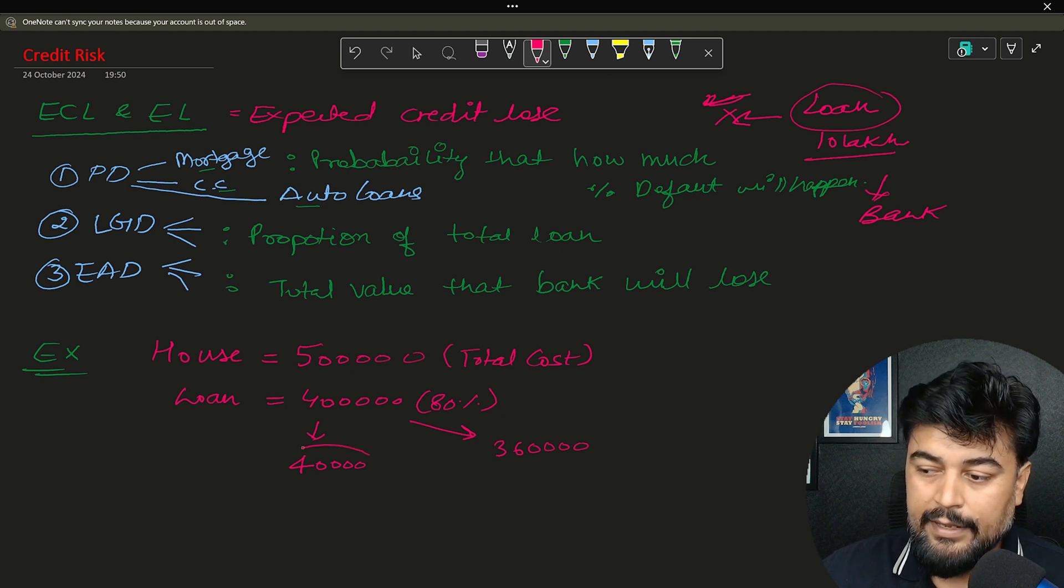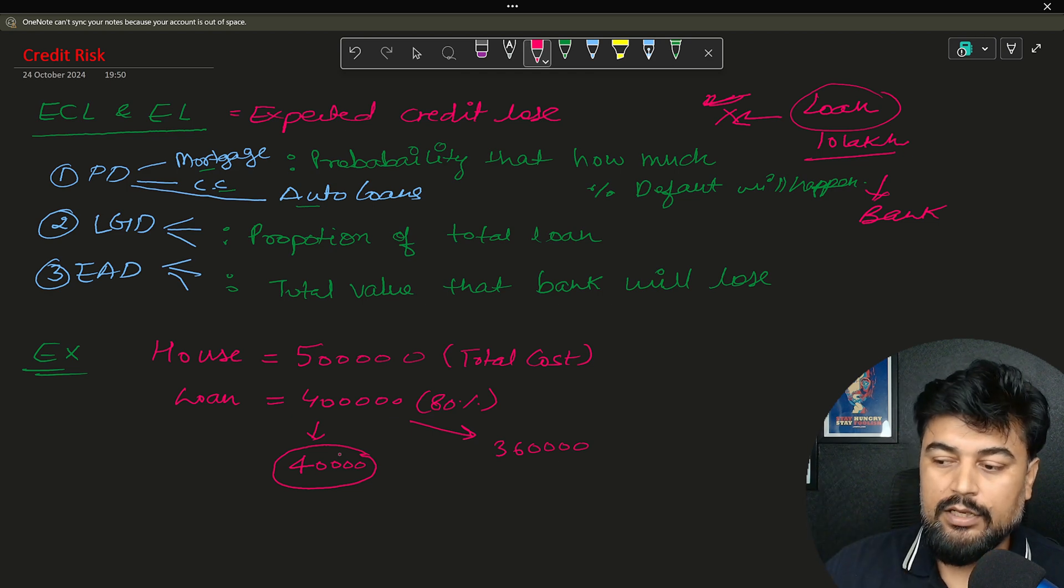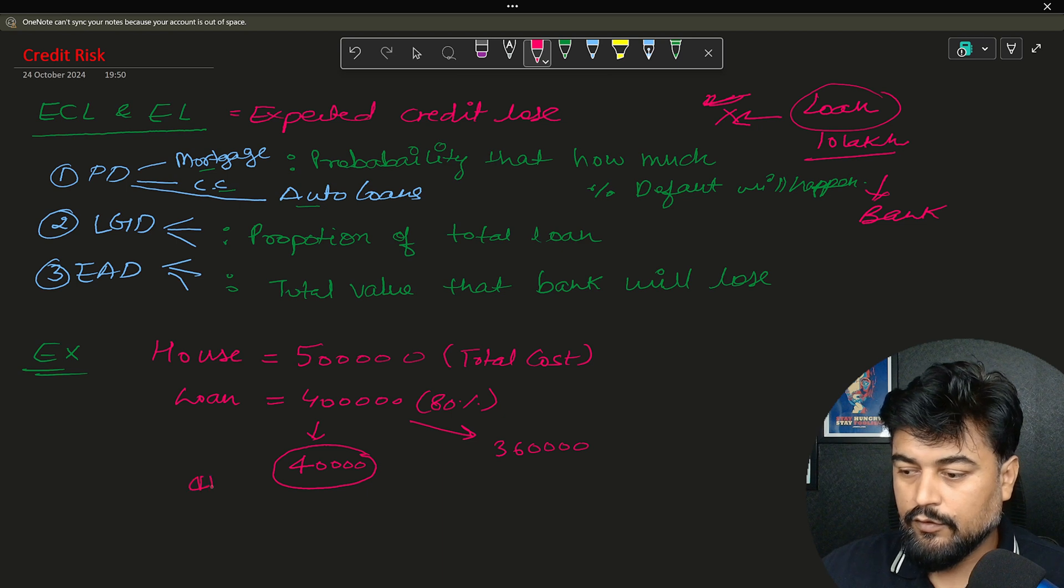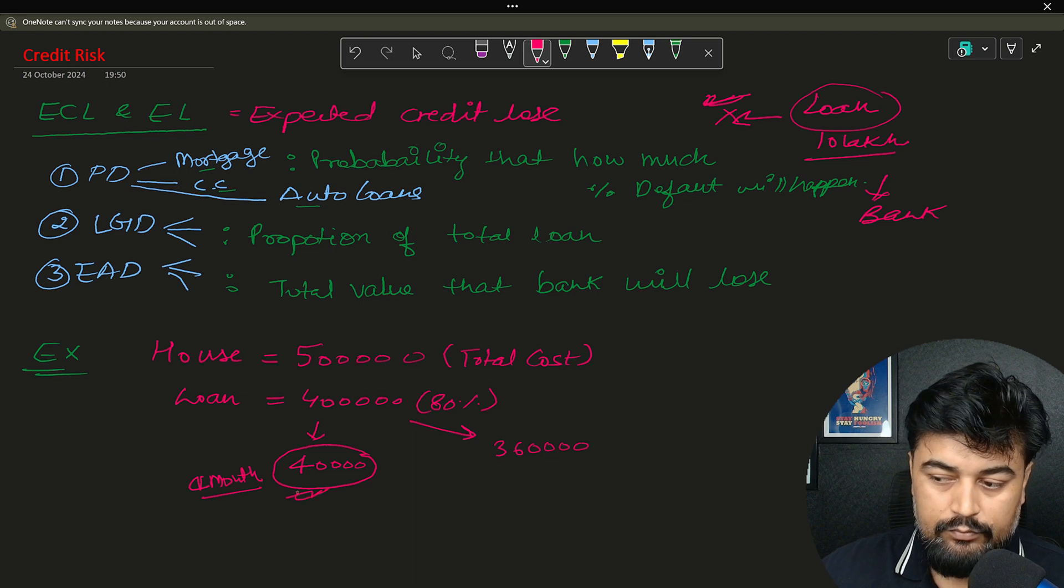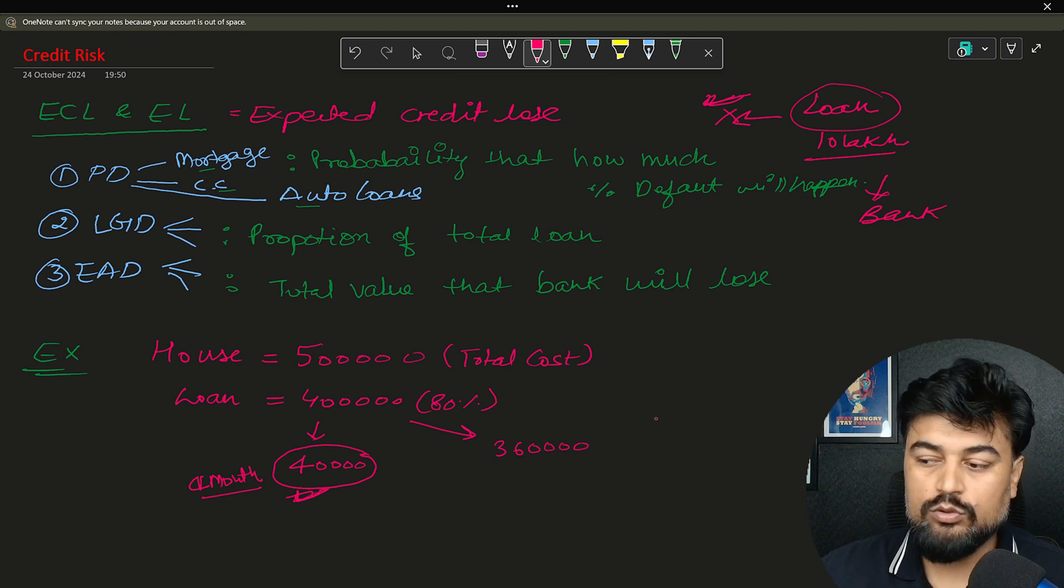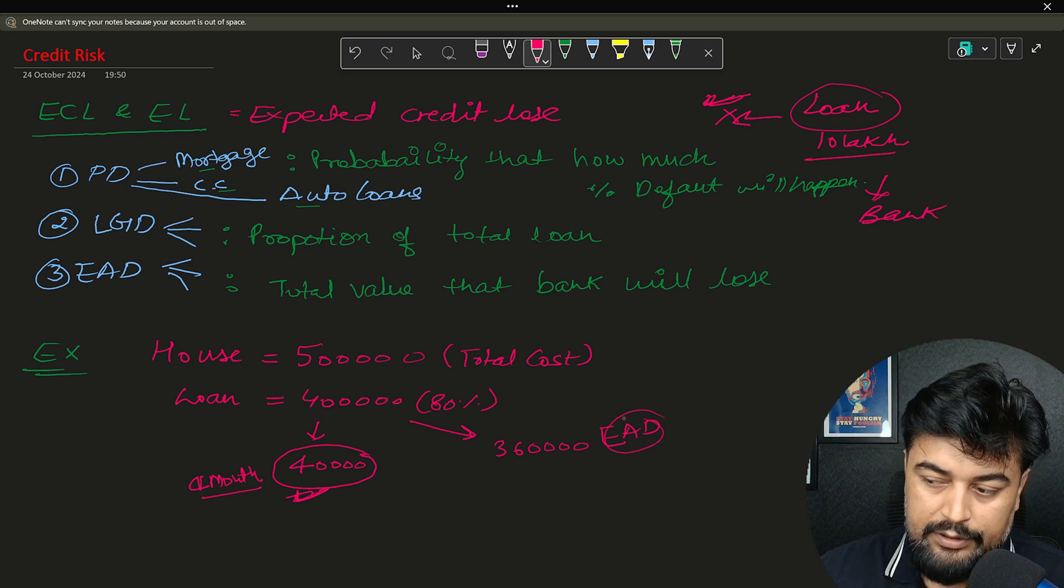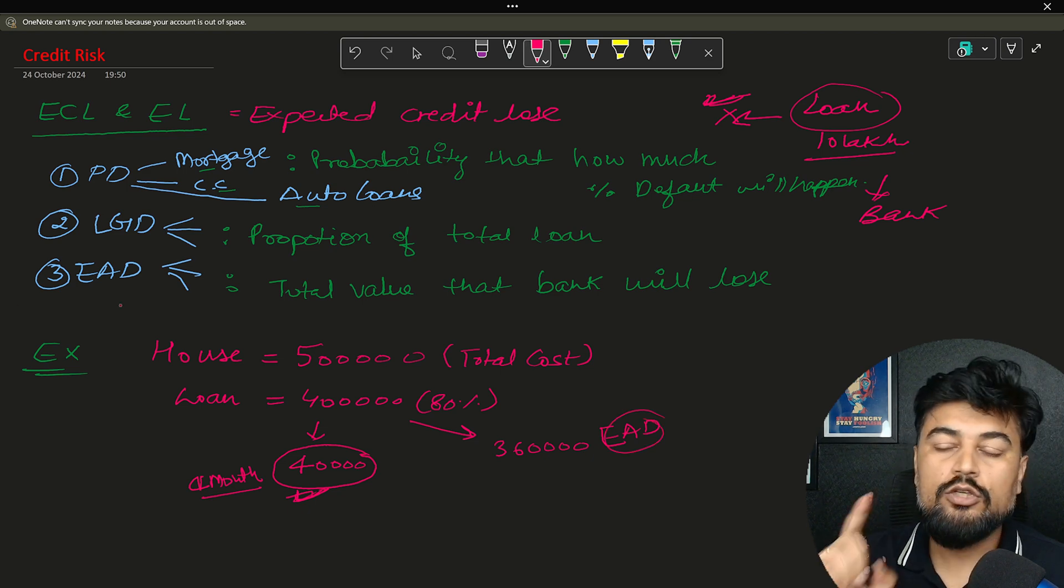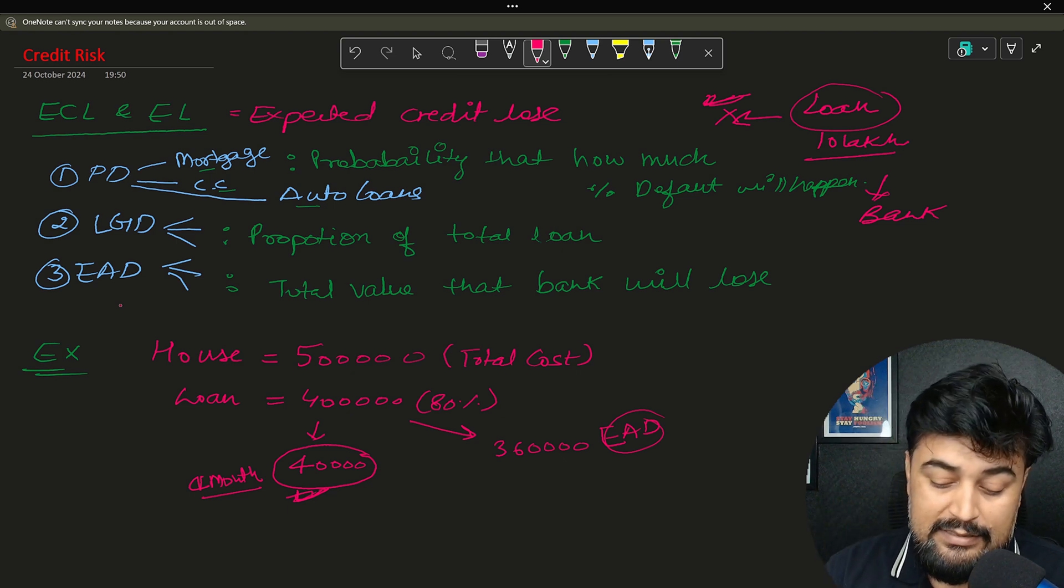Now after paying this 40,000, if he keeps on paying let's say 10,000 rupees every month, so after four months, this is the amount he paid. And this amount which is 3,60,000 is known as your EAD component, that is exposure at default. So the maximum loan loss which can happen to the bank is known as EAD.